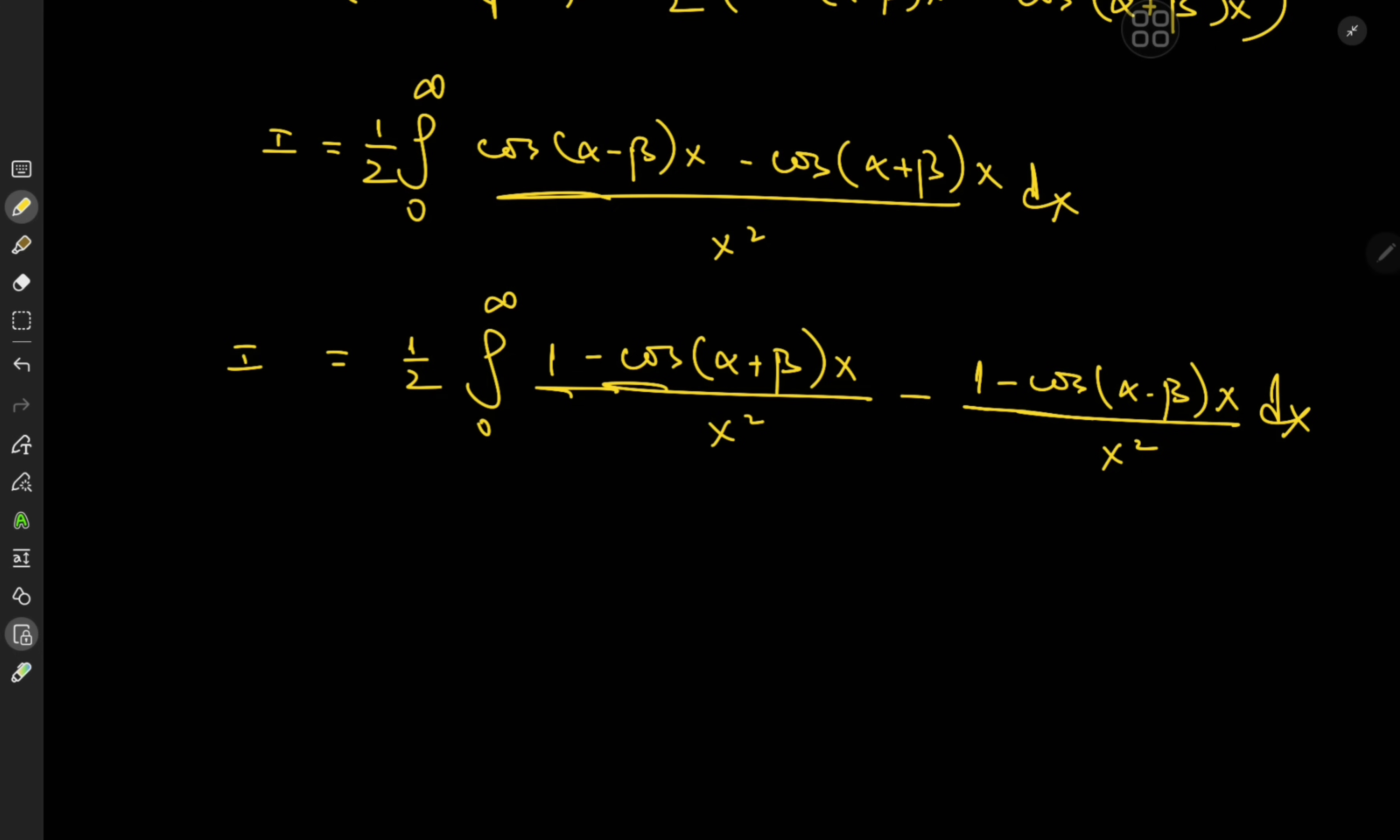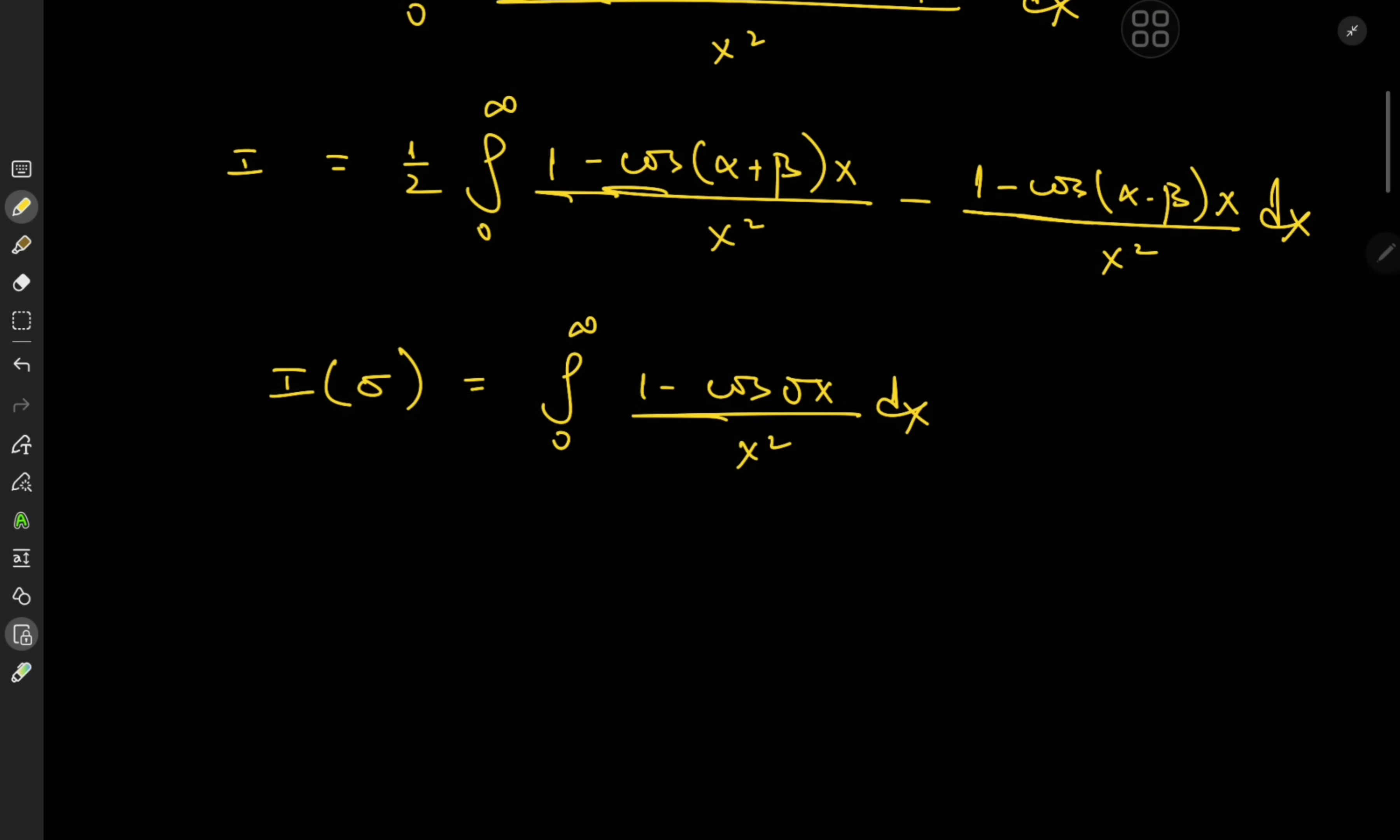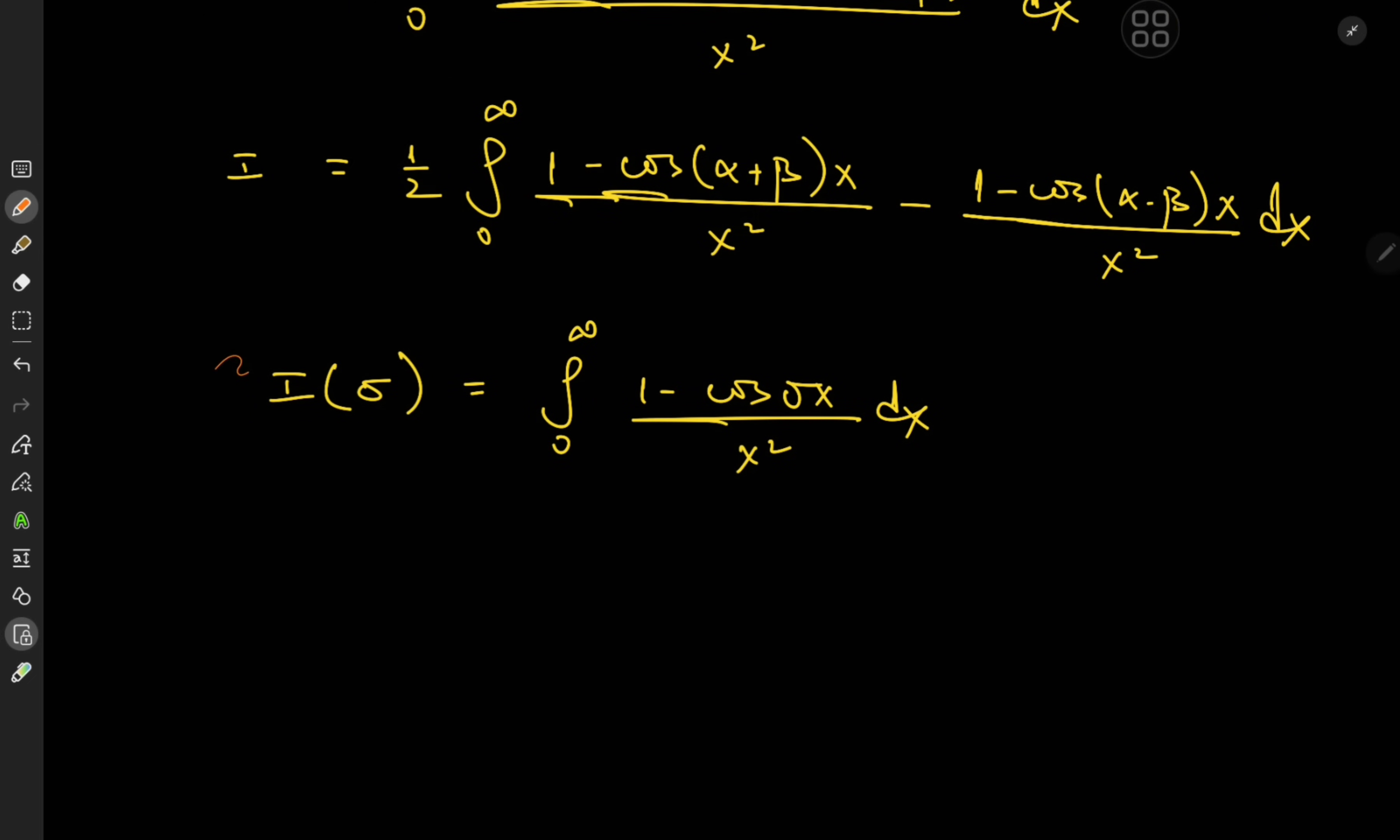So now I have a couple of very similar integrals that can be evaluated using a generalized integral function. I could use alpha or beta but they're already in use so we might as well make use of a different variable this time. Why not the integral function i of sigma defined as the integral from zero to infinity of 1 minus cosine sigma x over x squared dx. And you guessed it, we'll differentiate this thing with respect to the parameter sigma.